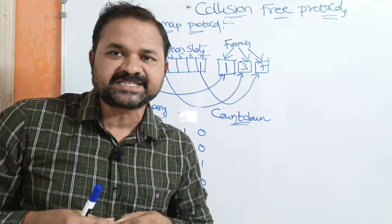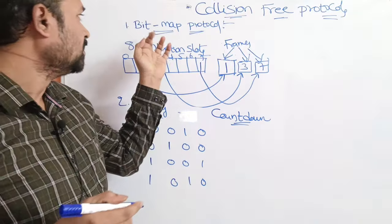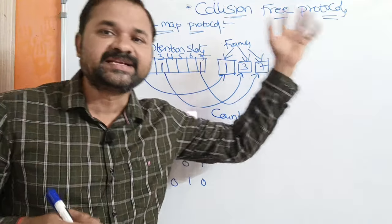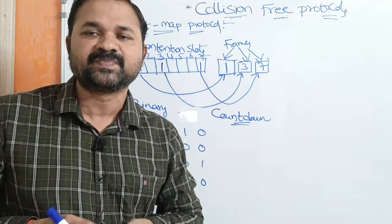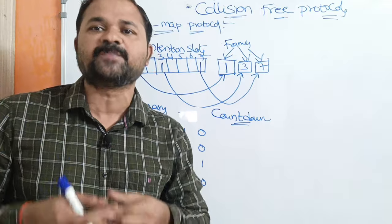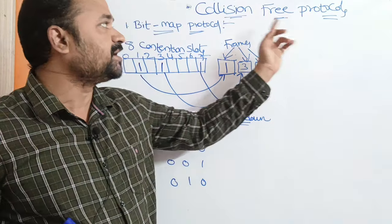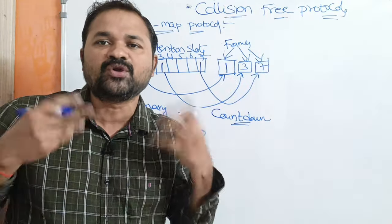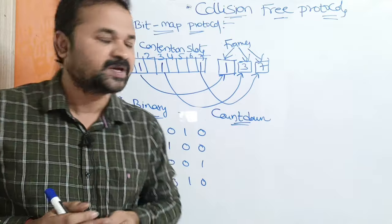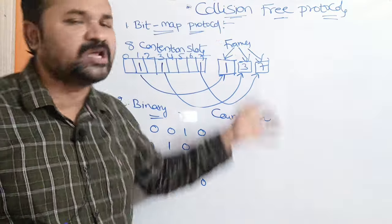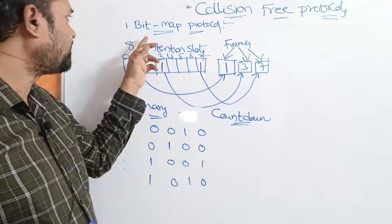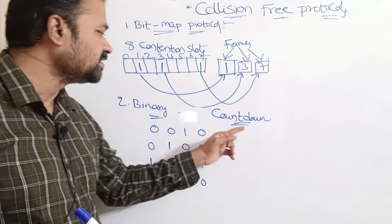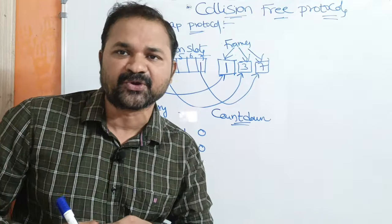Let us discuss collision-free protocols. The name itself specifies the meaning — these protocols are mainly useful in order to eliminate collisions so that we won't have any collision. Mainly we have two collision-free protocols: the first one is the bitmap protocol, and the second one is the binary countdown protocol.